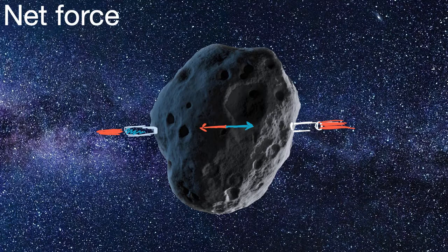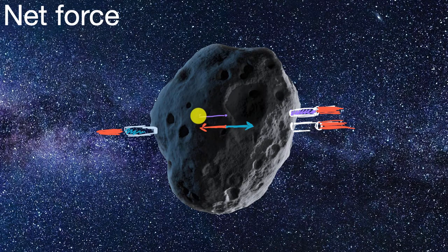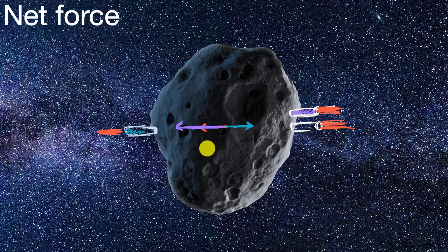Now let's say a third friend wanted to correct this situation. What they do is put another identical rocket right over here and ignite it. Now you had the original two forces that net out to each other, but you also have this new force — I'll draw it in purple because it's a purple rocket. That new force is now the net force, because you have the equivalent of two rockets going left and one going right. So if you net it out, it's equivalent to just having the one rocket we originally saw.